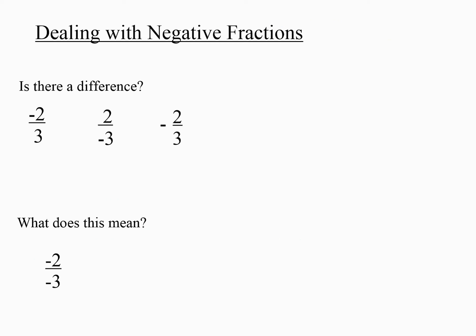This is where we left off before you went to get your pictures. So this question here — is there a difference? The reason this question comes up is it's often confusing for students when there's a negative sign in front of the fraction. Remember that the bar just means division. So negative 2 divided by 3 equals negative 0.6666 repeating, and 2 divided by negative 3 also equals negative 0.6666 repeating.